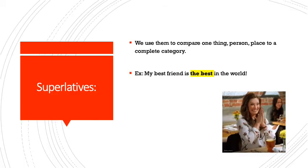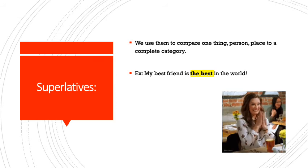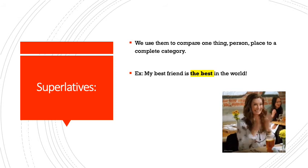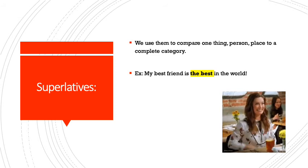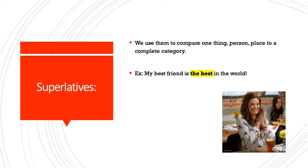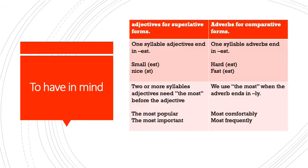Now we also have something called superlatives. When we use superlatives, we are comparing one thing, one person, or one place to a whole complete category. For example, 'my best friend is the best in the world' — I'm saying my best friend is the best you can find in the whole world. The category here is 'the world.' In superlative forms, we can also use adjectives and adverbs.